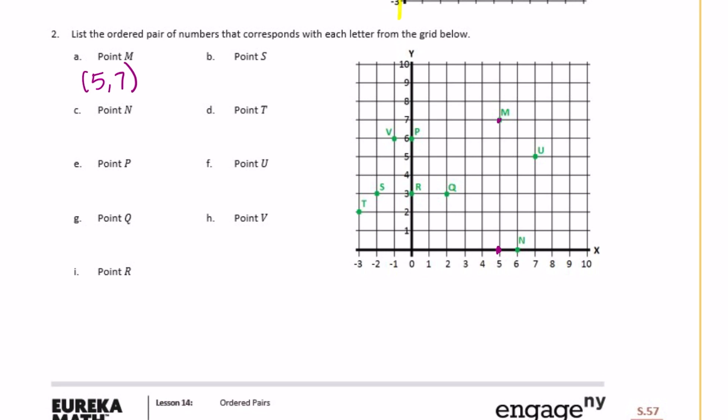Point s. Where is s? Here it is. Would be negative 2 and then up to 3. Point n is right here. So that would be x. We go over 6 to get on the x axis, but then we don't move anywhere. So it's 0. So 6, 0. Point t is right here. So we go negative 3 on the x axis and then up 2. So negative 3 and then up, so it's positive 2.